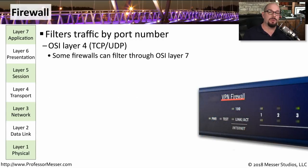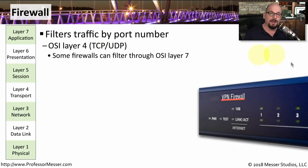You generally don't connect to any network these days without a firewall in place. Firewalls make decisions about whether traffic is allowed or not based on Layer 4 information, such as a TCP or UDP port number. Modern firewalls take that even higher and can look into the application going across the network to decide whether certain applications are allowed. We often refer to those as Layer 7 firewalls or next generation firewalls.